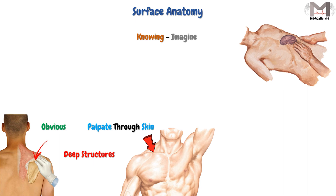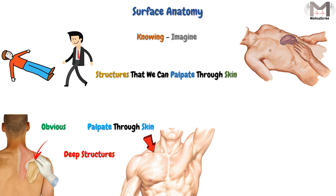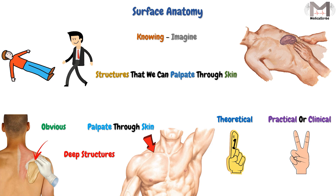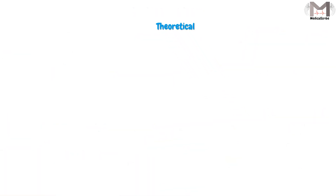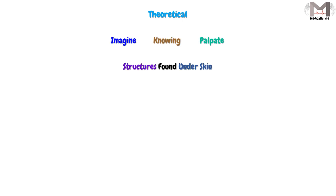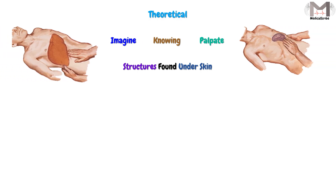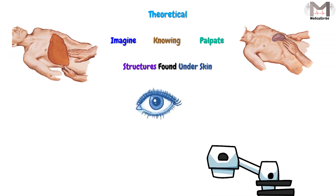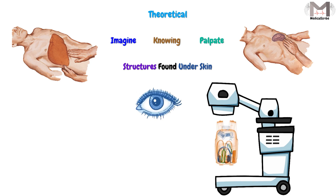So surface anatomy is knowing and imagining what is found under the skin in a specific region, and what structures we can palpate through the skin in a person either at rest or in action. By studying surface anatomy, we have two main goals to achieve: one is theoretical and the other is practical or clinical. The theoretical goal is to imagine, know, and palpate the structures found under the skin — so our eyes become like an X-ray machine checking a bag's contents.